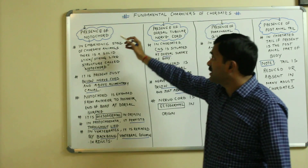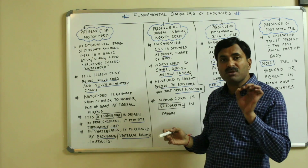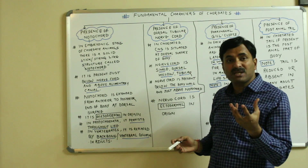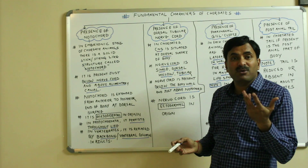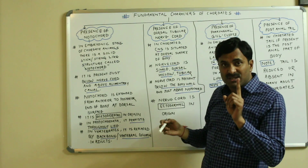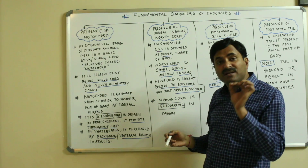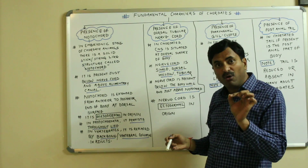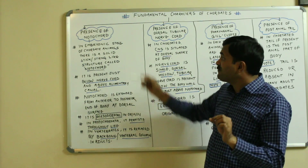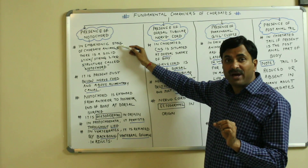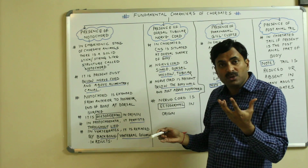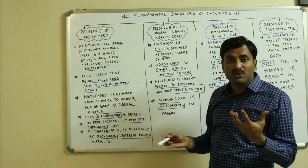Now have a look at the first one: presence of notochord. This is the most important feature of the chordates because the notochord is present in the chordates and hence they are called chordates. In embryonic stages of the chordate animals, there is a solid stick or string-like structure called the notochord. I have used the term embryonic stage because in adults, this notochord will be converted into the backbone or the vertebral column.